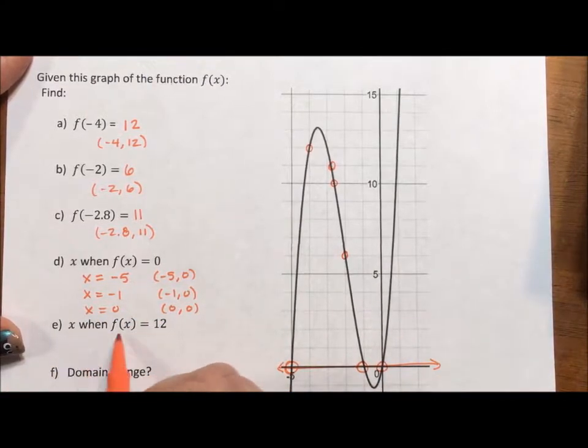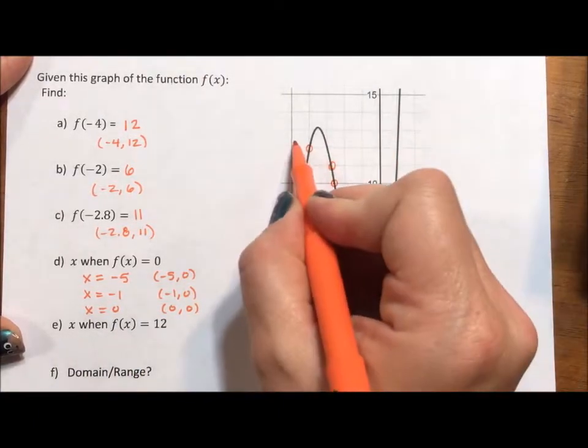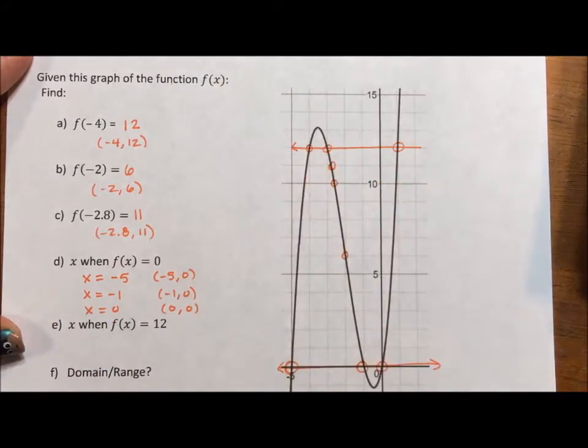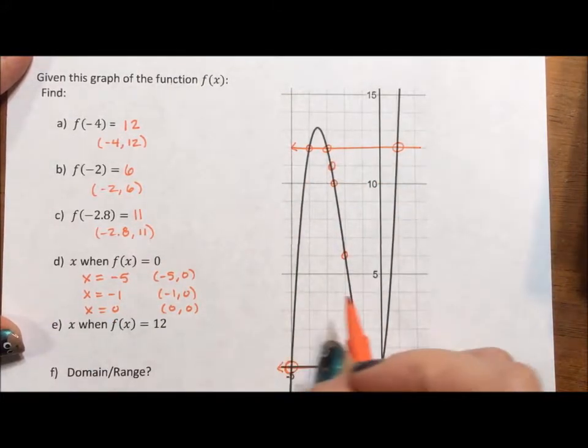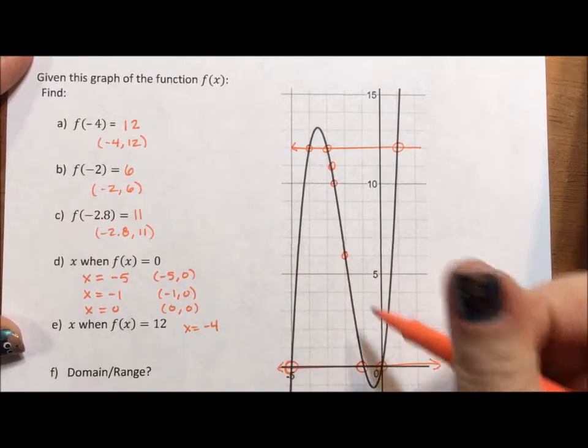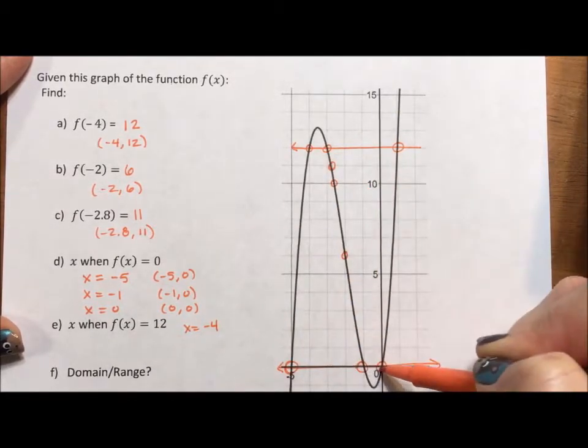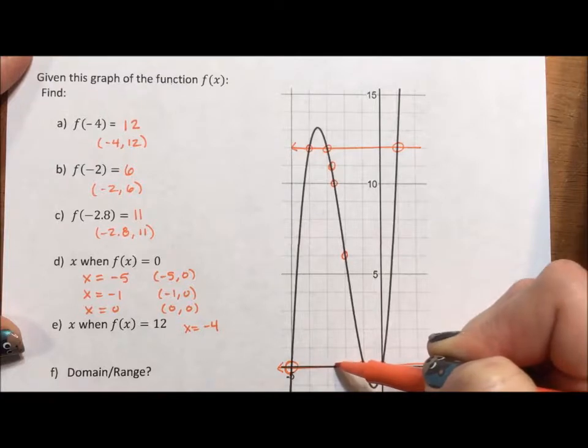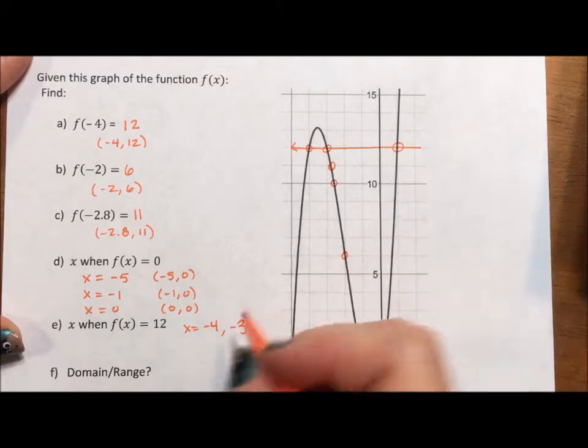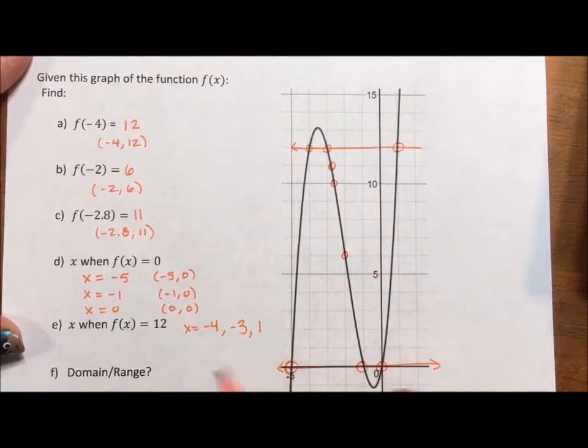It says find x when f of x is 12. Well, 10, 11, 12. 12 is this line. 1, 2, 3. It's three points again. Okay, so we have x equals negative 4. We have x equals 1, 2, 3, negative 3. And we have x equaling 1. I could write these as ordered pairs. I don't have to. It's actually not part of the directions.